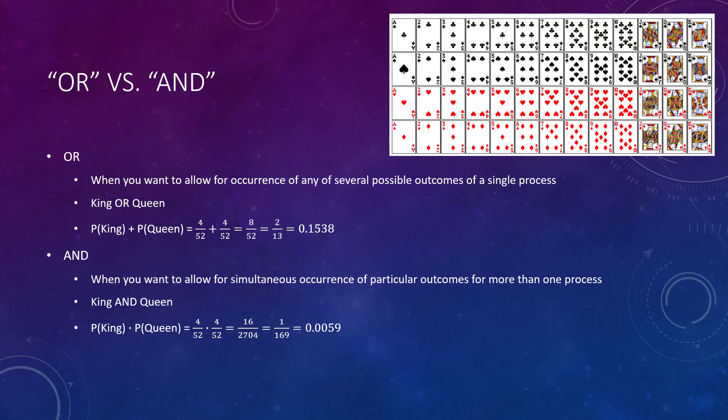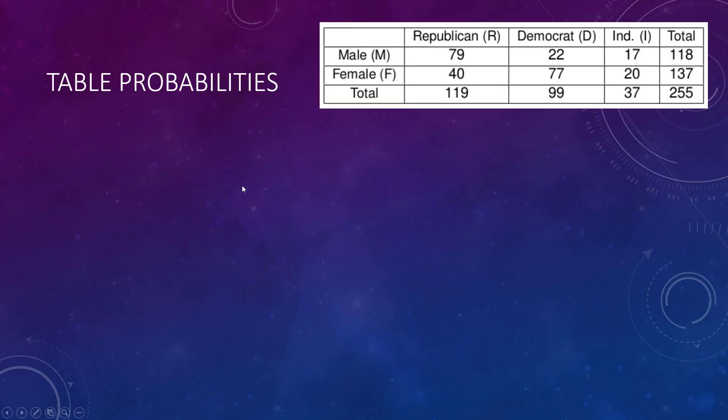Table probabilities - this is getting more into the real world type stuff than just probabilities of slot machines and playing cards. If you have actual data, you typically like to summarize it in a table and then you can answer questions based on the table. What's the probability you would get a male? There's 118 males out of the total 255.